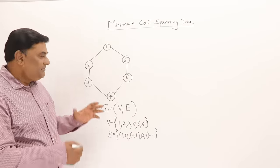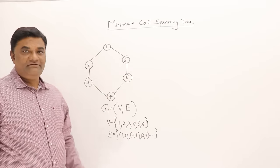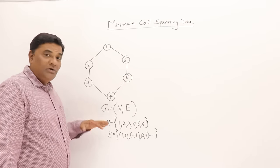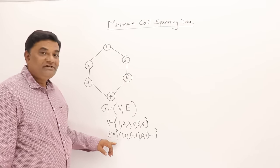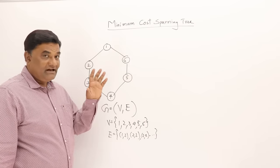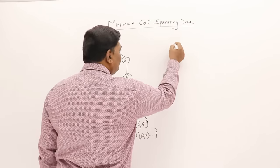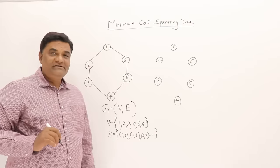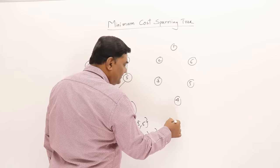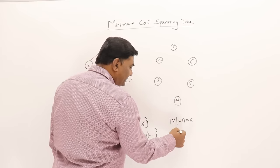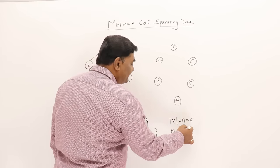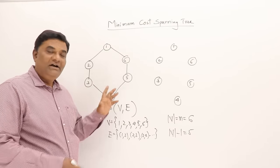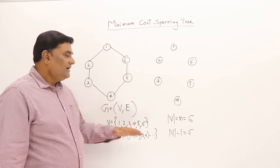Now what is a spanning tree? A spanning tree is a subgraph of a graph — I should take a subset of it. I should take a subset of edges, but the vertices must remain as they are. So I should take all vertices. How many edges? If the number of vertices is n, that is 6, I should take n minus 1, that is only 5 edges.